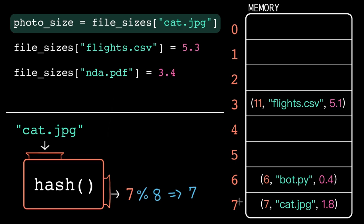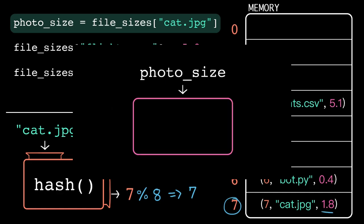So, we go to slot 7, double-check that the key matches. And since it does, we grab the value stored there. We substitute that back in, and then we store that float in a new variable called photosize.